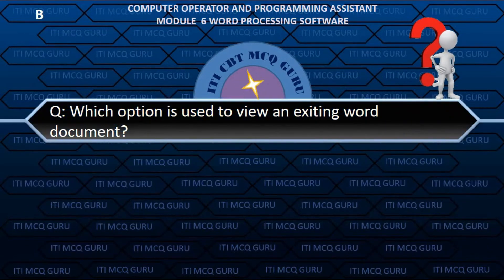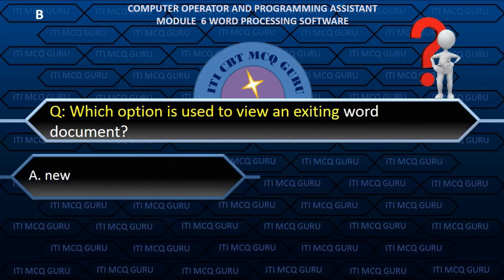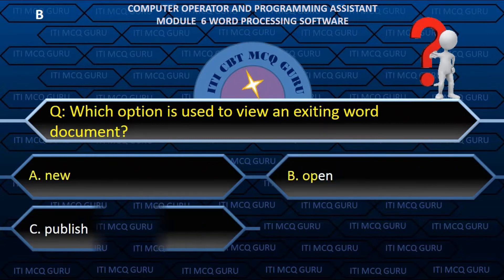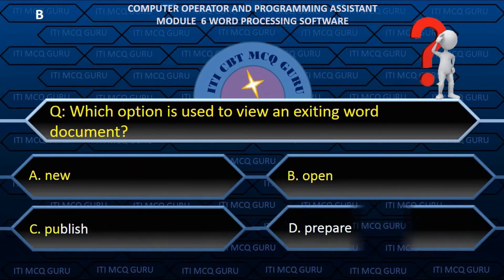Which option is used to view an existing Word document? B. Open.